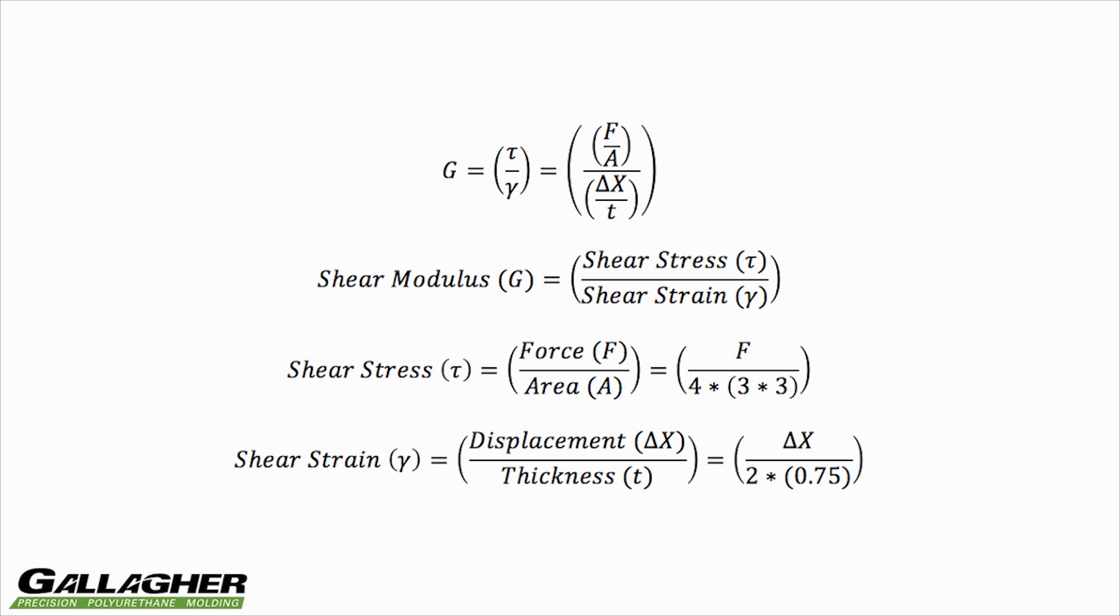The shear strain is found by taking half the displacement, which we get from the testing machine, and dividing that by the polyurethane block thickness. The displacement needs to be halved to account for the fact that displacement occurs equally in both directions.